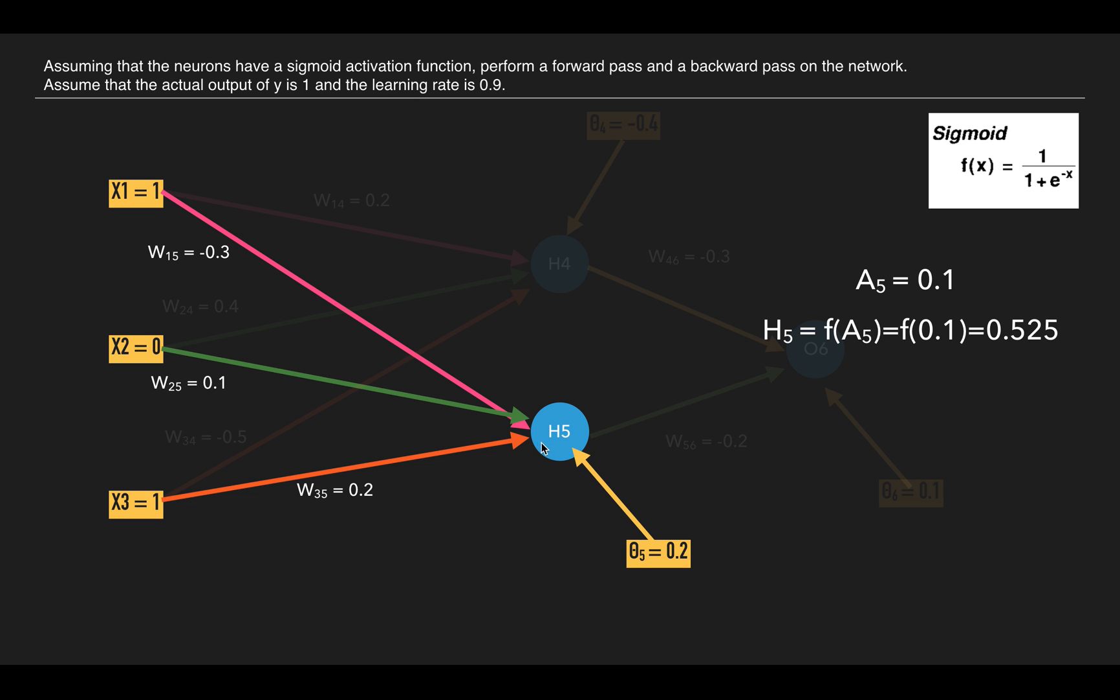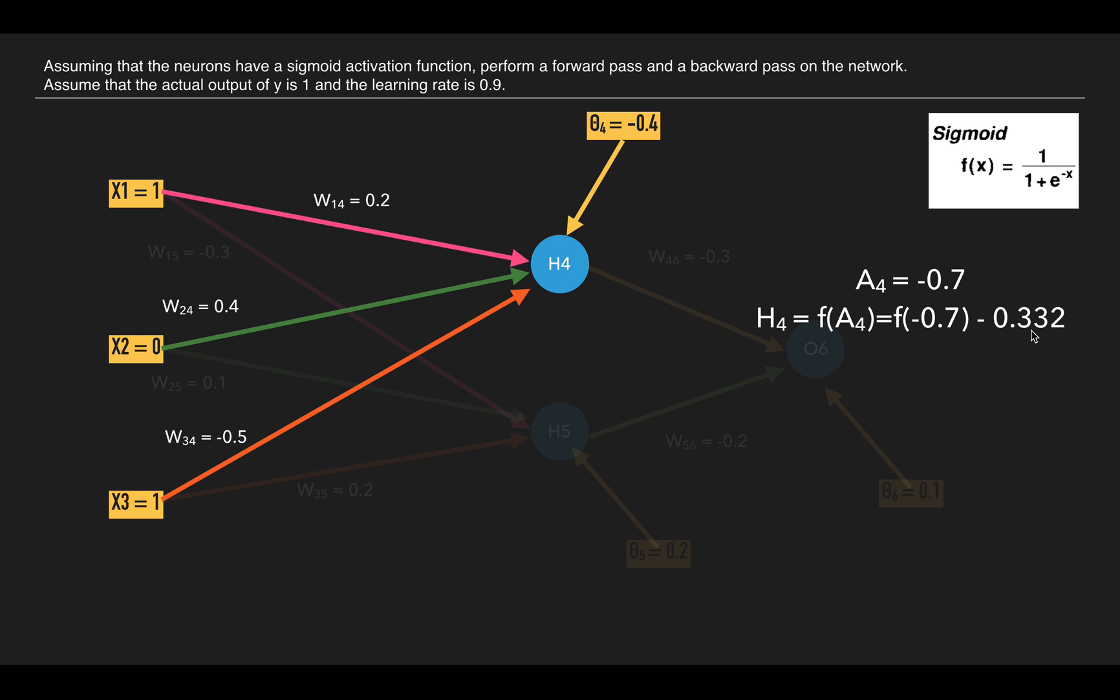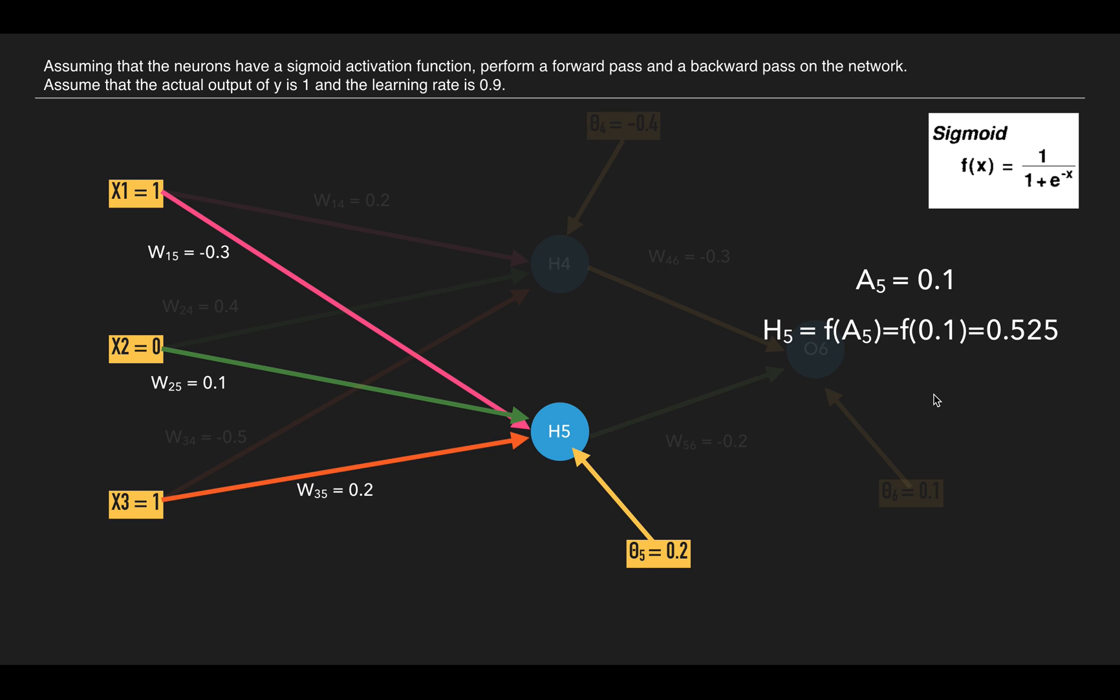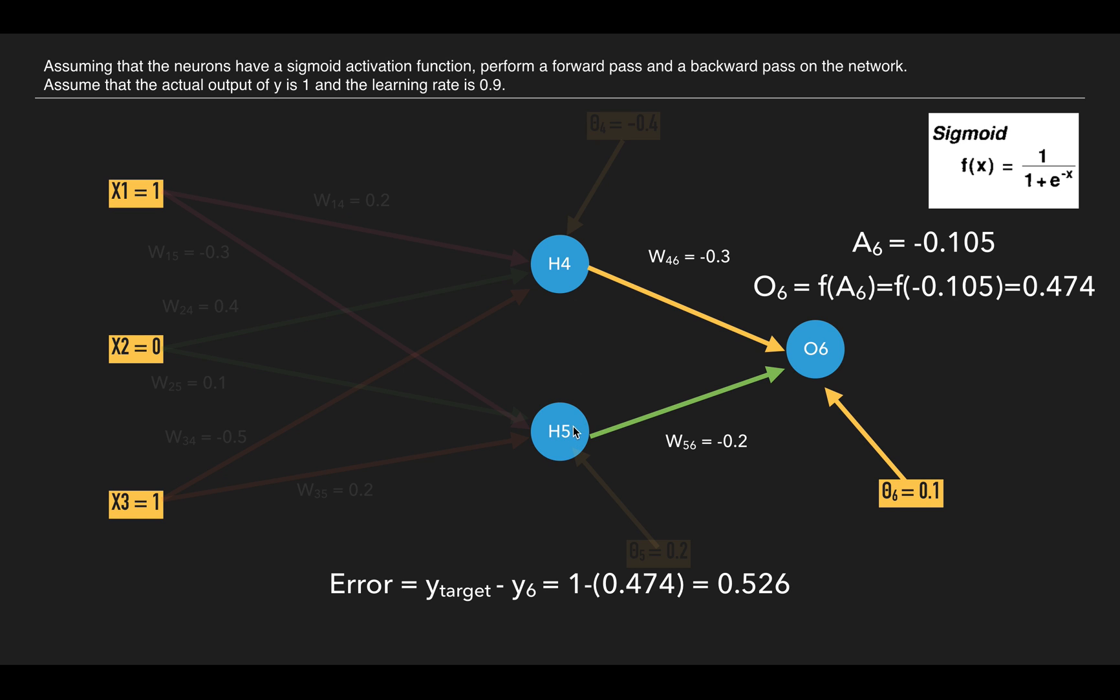For h5 we again do the same procedure. We multiply x1 by w15, x2 by w25, x3 by w35, sum them up, and add theta_5 to it. So we get 0.1 as the value, and when we pass it to the sigmoid function we get 0.525. So we have got 0.525 here and 0.332 here.